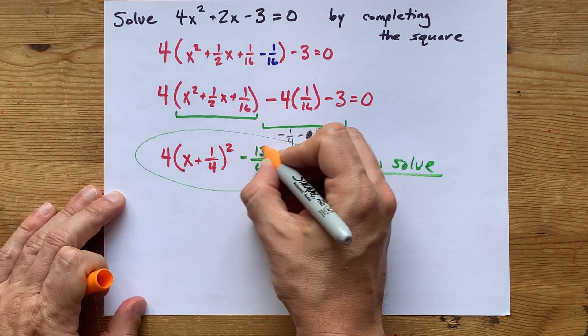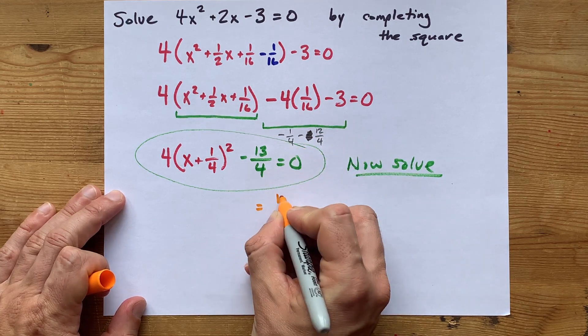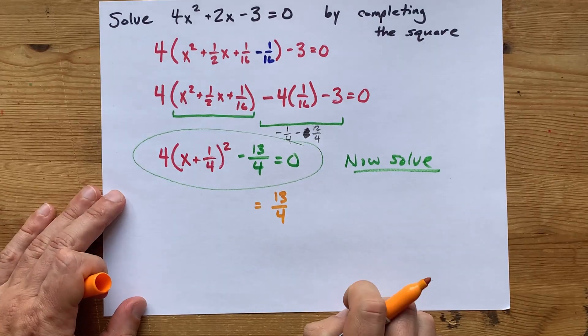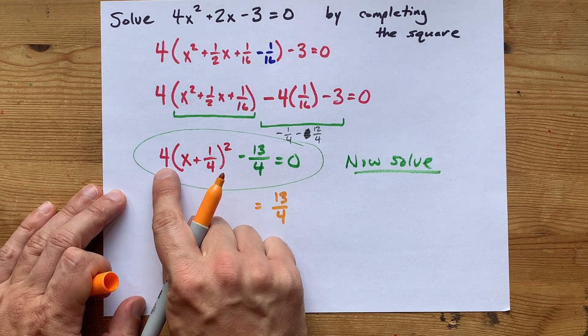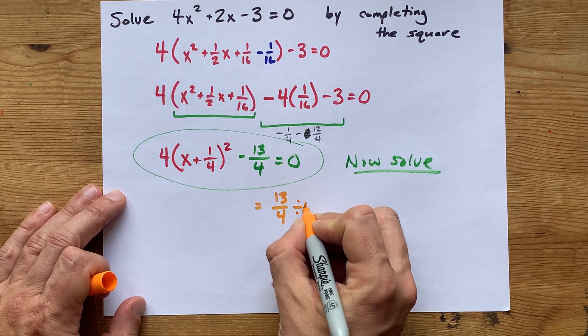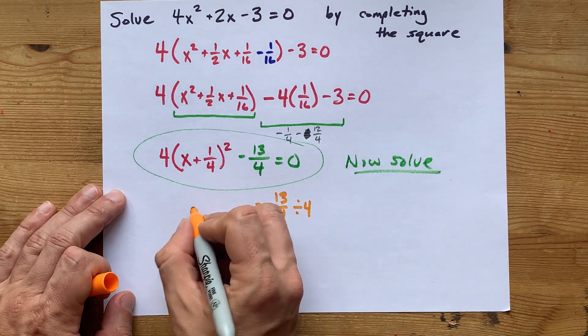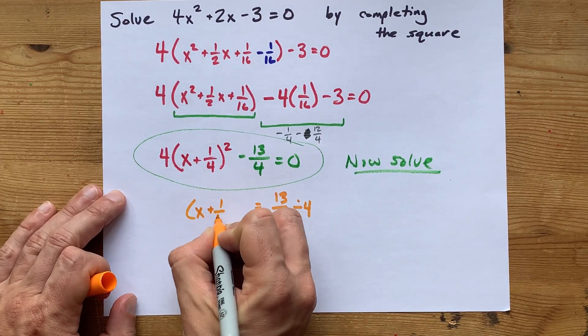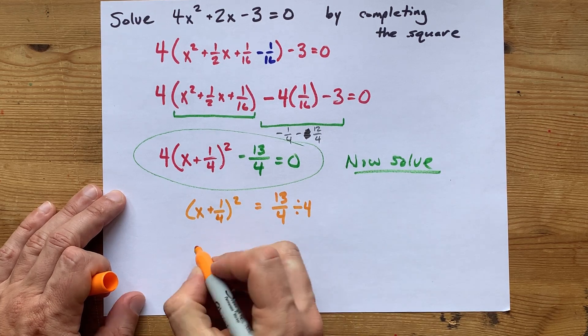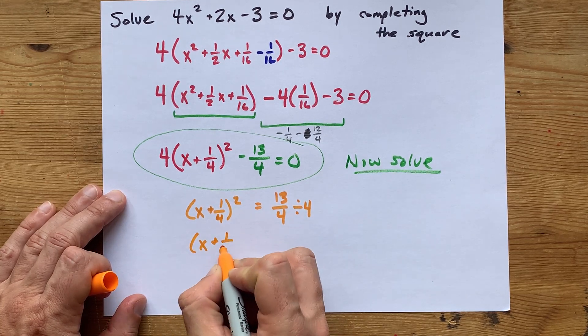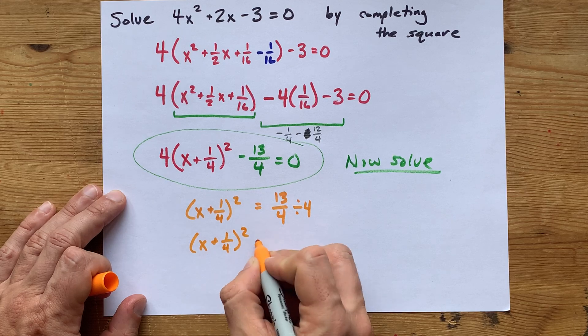When I undo that on the other side, I end up with positive 13 quarters. I have to undo multiplying by 4. So, I have to divide both sides by 4 as well. That's enough undoing at once. 13 quarters divided by an extra 4 is 13 sixteenths.